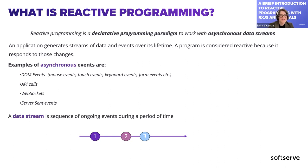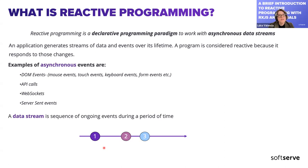This graphic represents this a little better. If I have a timeline representing the duration of the application, I have different events happening during the application — but not one after another, which would be synchronous. Instead, we have events happening at different periods and moments of time. A data stream is the sequence of those asynchronous events during the duration of the application.